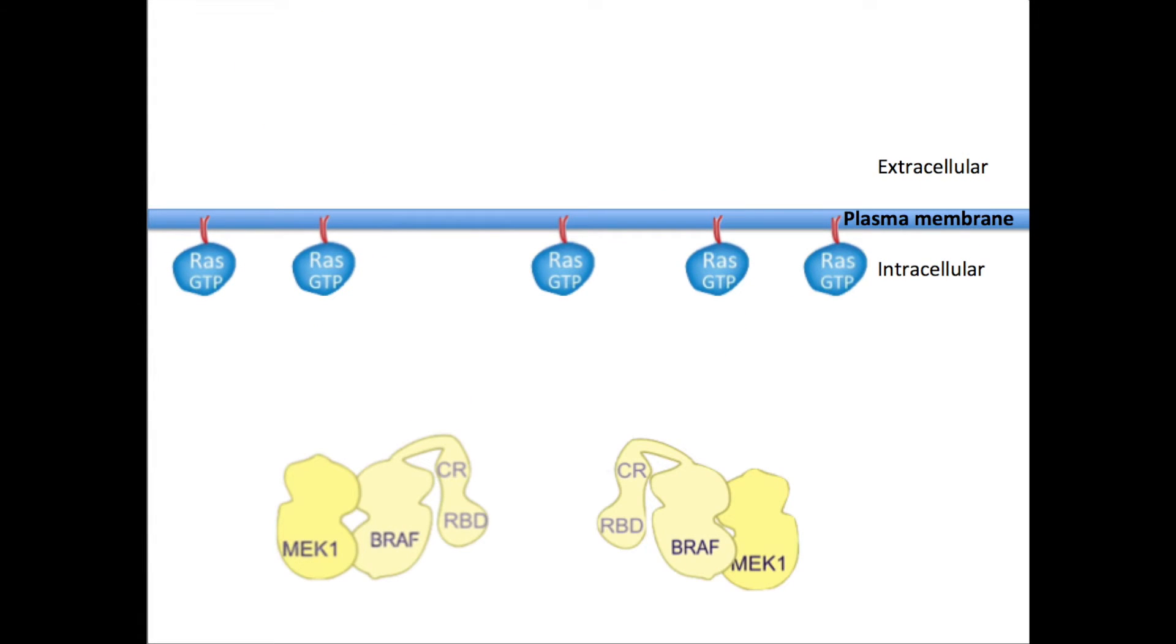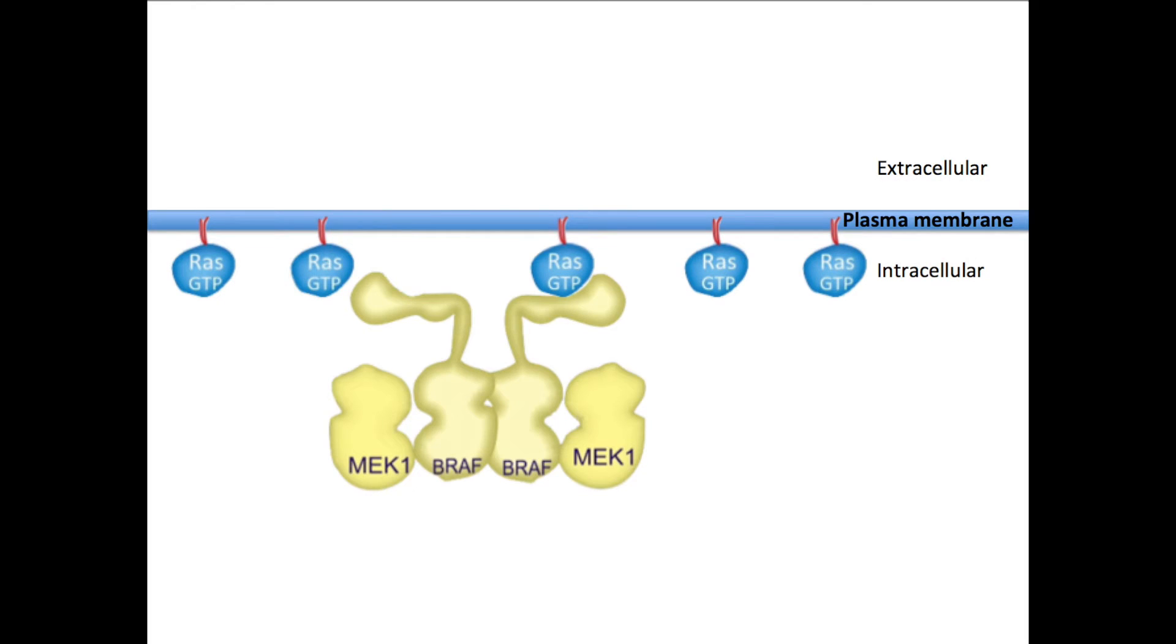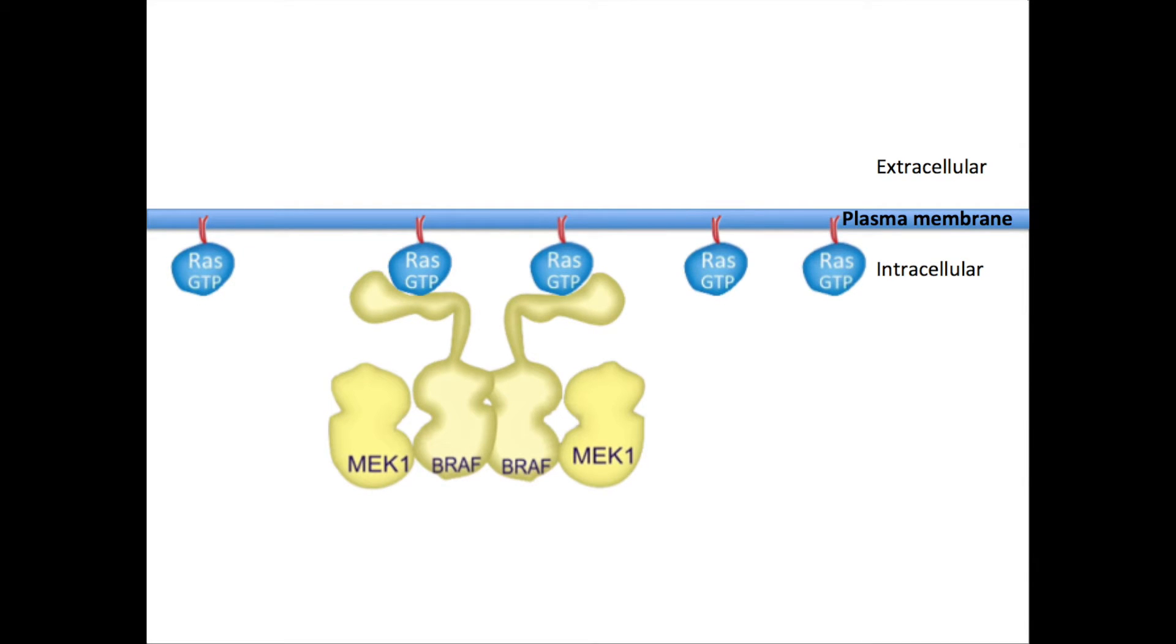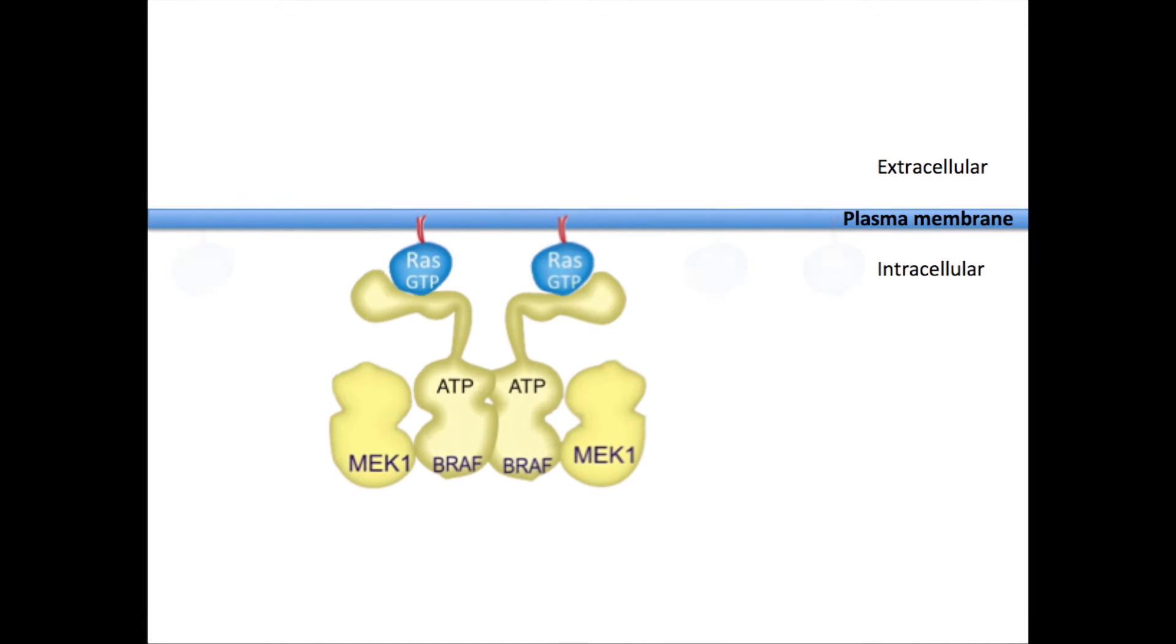This allows for it to bind BRAF, a kinase. BRAF is in its inactive state loosely bound to MEK, also a kinase. Two RAS proteins bind to two BRAF proteins, inducing dimerization of the BRAFs. This brings about a conformational change in the structure of BRAF, allowing it to bind ATP. BRAF does not need to be phosphorylated to become active.